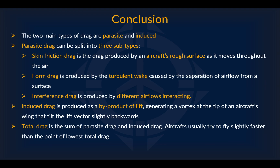Here's a recap of what we learned today. The two main types of drag are parasite drag and induced drag. Parasite drag can be split into three subtypes: skin friction drag, produced by an aircraft's rough surface; form drag, produced by the turbulent wake caused by separation of airflow from a surface; and interference drag, produced by different air flows interacting. Induced drag is produced as a byproduct of lift, generating a vortex at the wing tip that tilts the lift vector slightly backwards. Total drag is the sum of parasite drag and induced drag, and aircraft usually fly slightly faster than the point of lowest total drag.